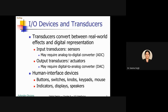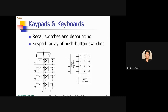You have used many embedded systems, so you know what types of human interface devices exist. Input devices include buttons, switches, knobs, keypads, and mice. Output devices include indicators, displays, and speakers. We will now see how each one works.